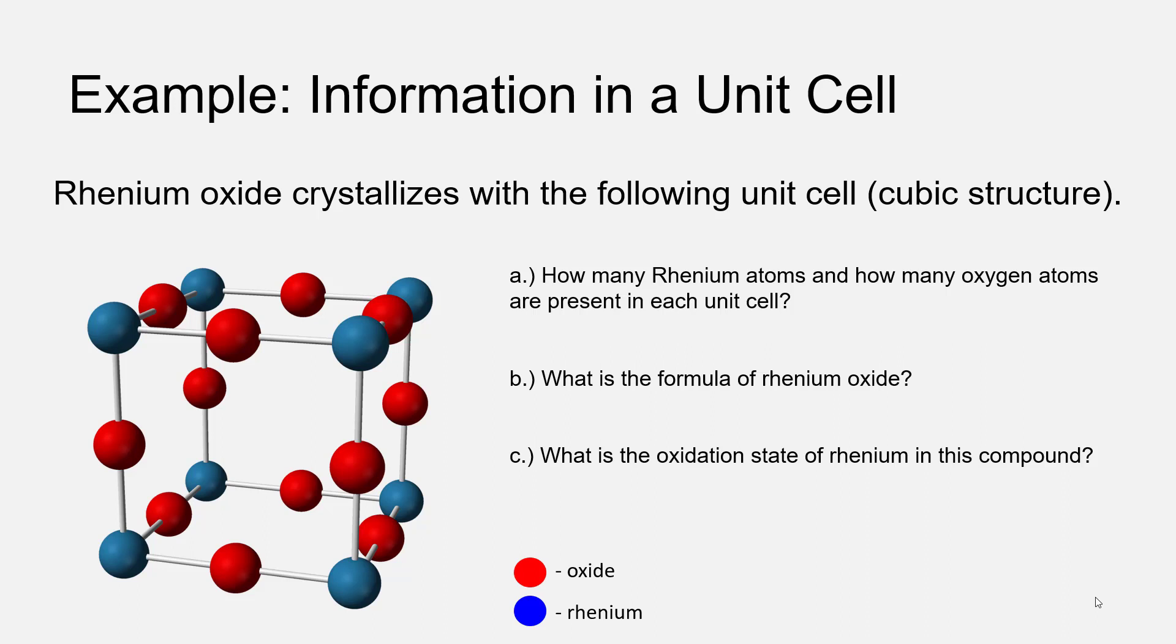Rhenium is a metal element on the periodic table with atomic symbol Re, and this is an ionic compound of Rhenium and Oxygen. We're shown the unit cell of this ionic crystal, and it's a very complex looking unit cell compared to our metal unit cells, where the red dots are oxide and the blue dots are Rhenium, shown as a ball and stick model rather than a space filling model.